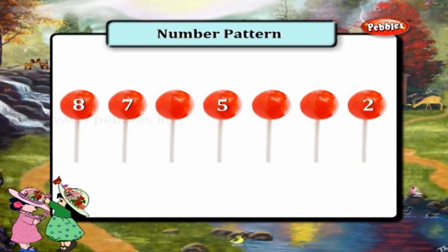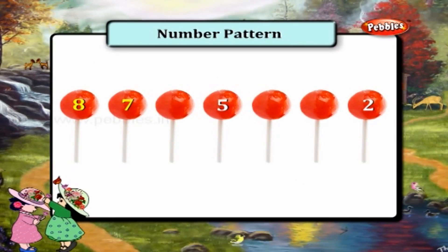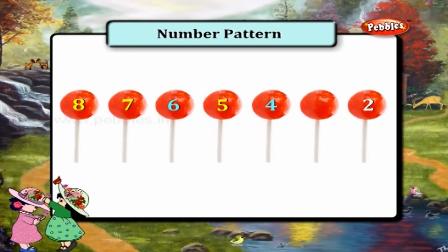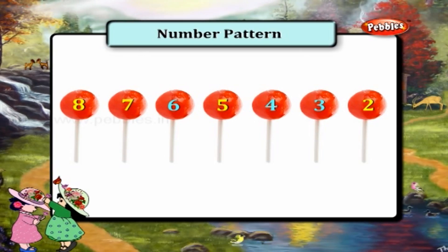Let us look at the next pattern: 8, 7, 6, 5, 4, 3, 2. This pattern is in the descending order.